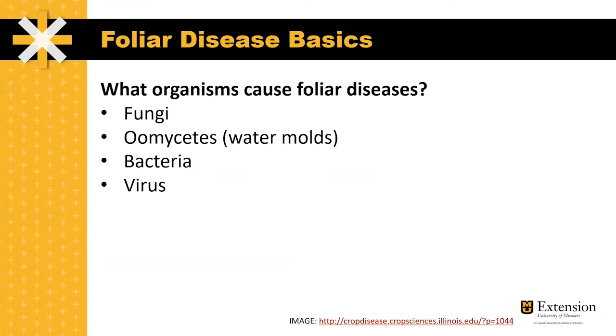The four organisms that can cause foliar diseases are fungi, Oomycetes, bacteria, and viruses, although the vast majority of foliar diseases in tomatoes are caused by fungi.